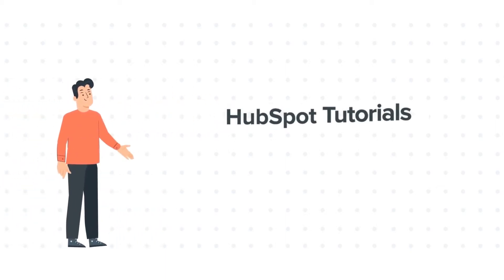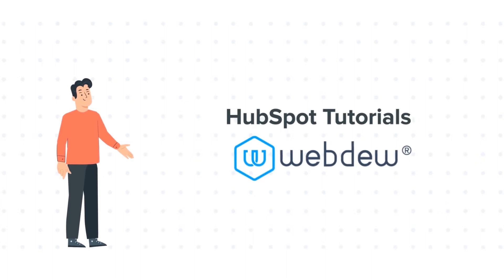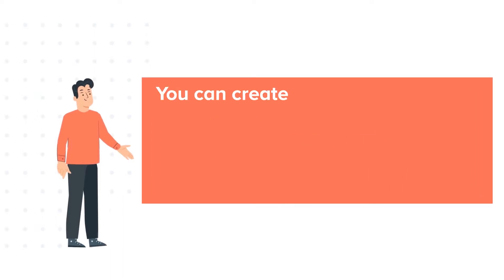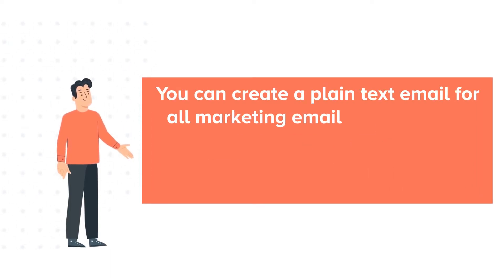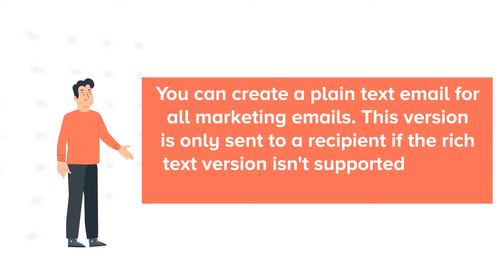Hello and welcome to HubSpot tutorials by Webdo. This is Bob and today's tutorial is about how to customize plain text emails. You can create a plain text email for all marketing emails. This version is only sent to a recipient if the rich text version isn't supported in their email client.